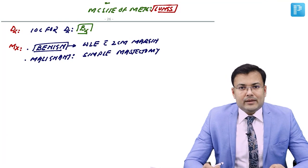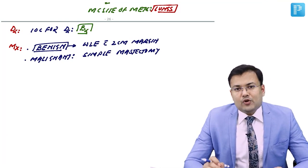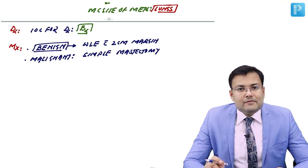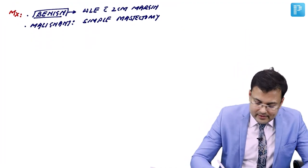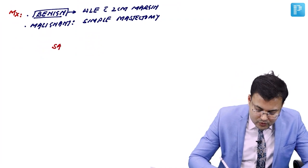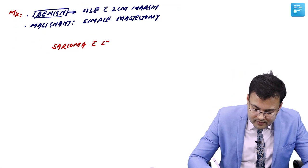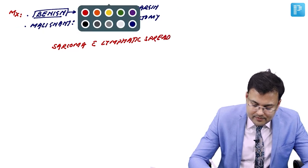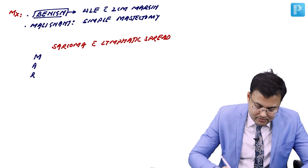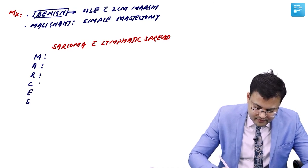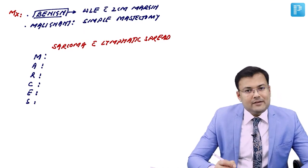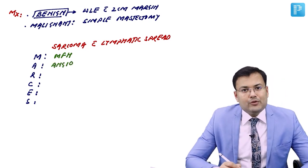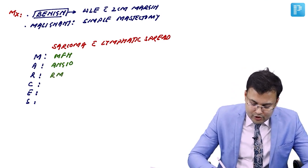However, there are exceptions — six sarcomas that do have lymphatic spread, so lymph node dissection is required. The mnemonic to remember these is MARCES: M = Malignant fibrous histiocytoma, A = Angiosarcoma, R = Rhabdomyosarcoma.